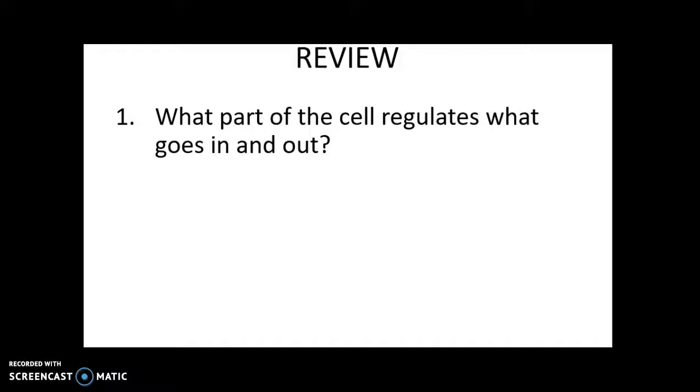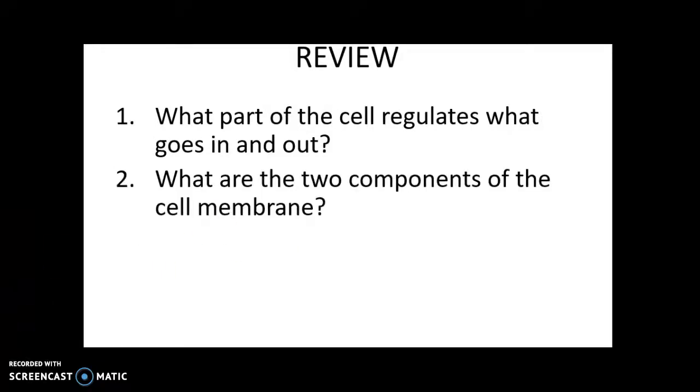Here we go. First question. Which part of the cell regulates what goes in and out? Good. The cell membrane, or we can also call it the plasma membrane. Excellent. Next up, what are the two main components of the cell membrane? What are the two main things that the membrane is made of? Nice. Lipids and proteins. Very good. And finally, what are the two main types of transport? Good. We just mentioned these, and these are passive and active. Fantastic.